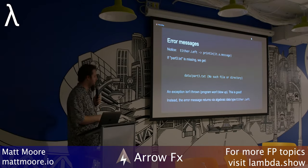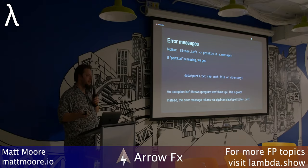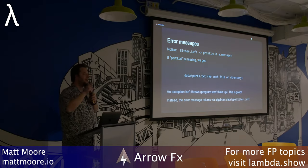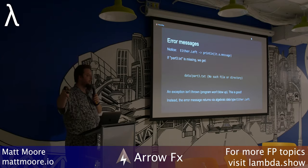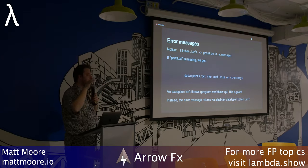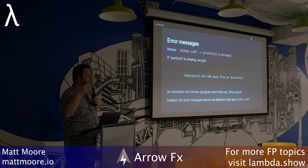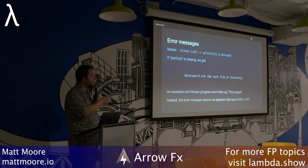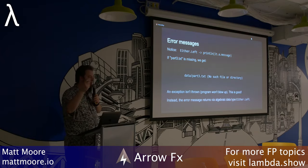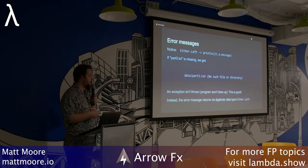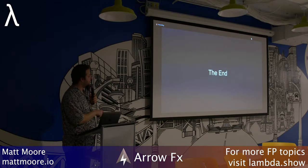Algebraic data types are a way to model that. When we say Either left or right, Either is the overall encompassing data class in Kotlin — it's a sealed class — and left or right are the subclasses representing the possible components. You can extend that however much you want depending on which monad you're using.